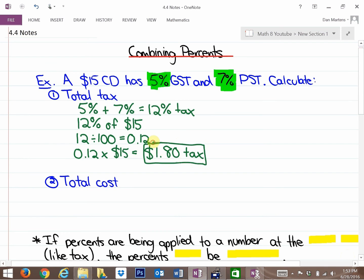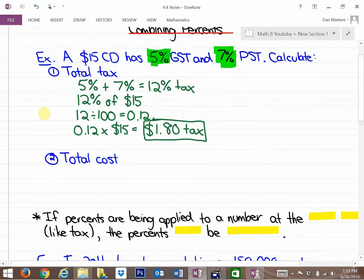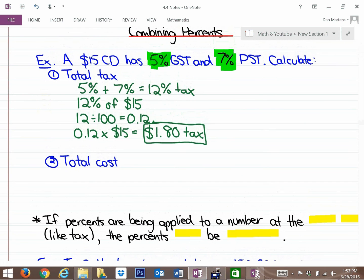The nice thing about tax-type problems, and a number of these problems, is you know if your answer is realistic or not realistic. So the total tax is $1.80. The next question, and you might want to pause this as you're writing things down or thinking about them, or you might want to work ahead on some of these problems, is the total cost.